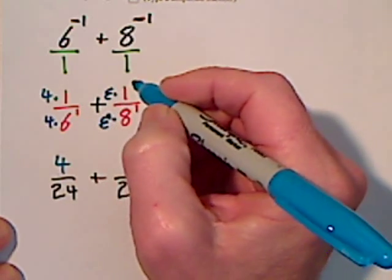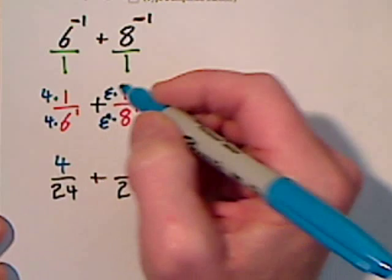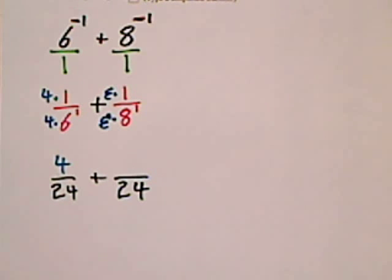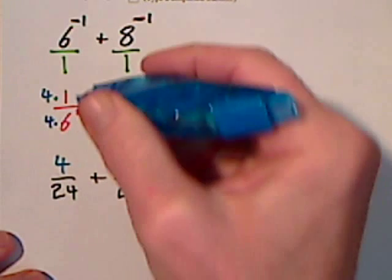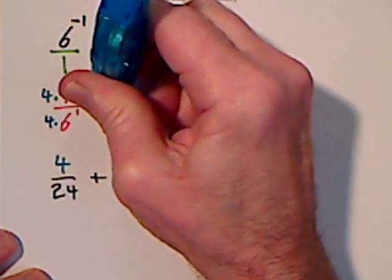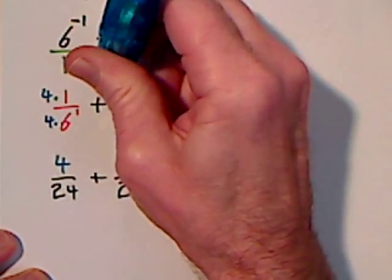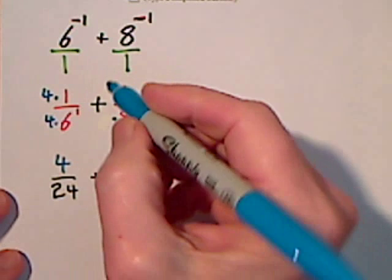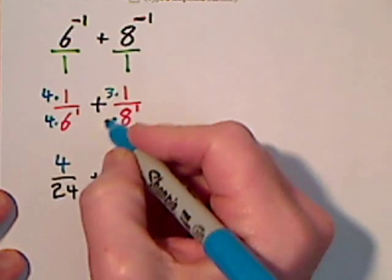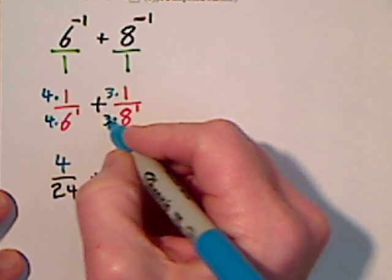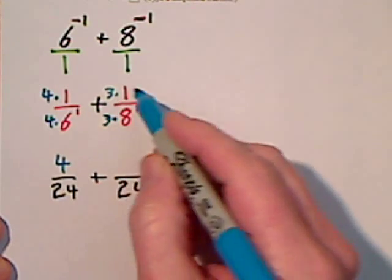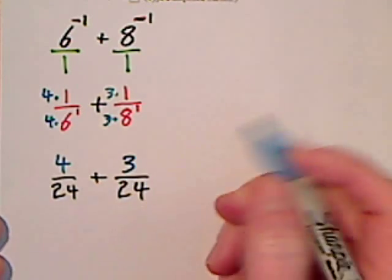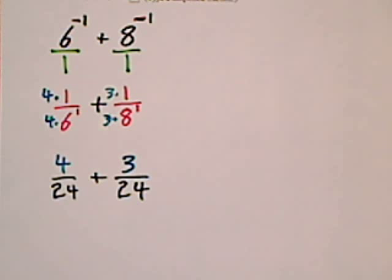That's the strangest 3 I ever saw — it's a backwards 3. That won't work, let's try it this way — that looks much better. So 3 times 8 is 24, and 3 times 1. Now that we have common denominators, we can add.